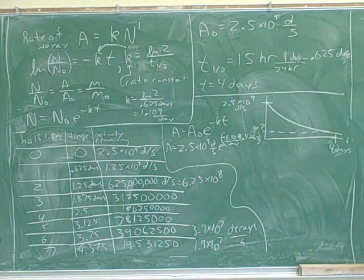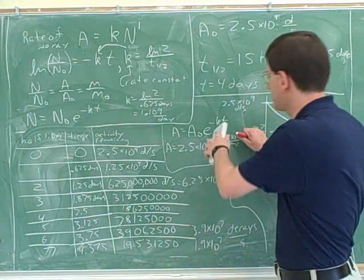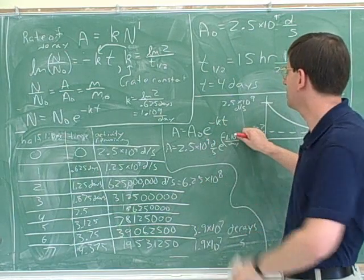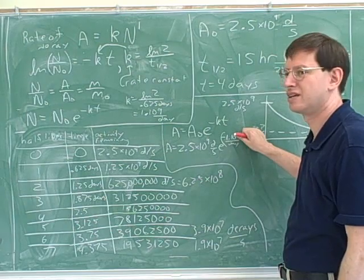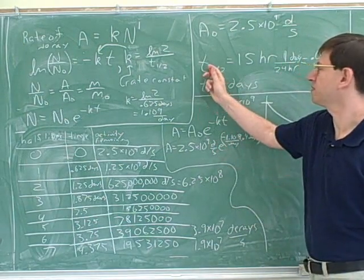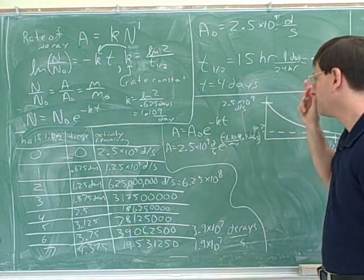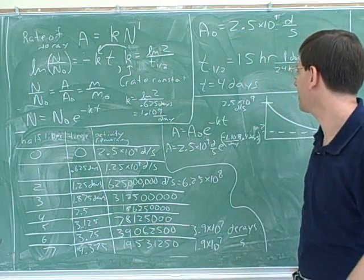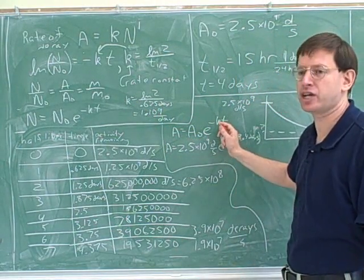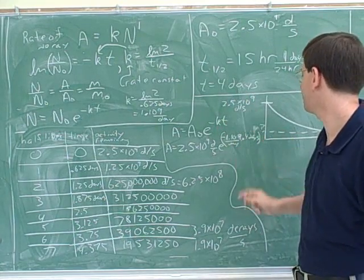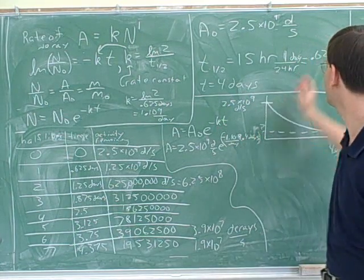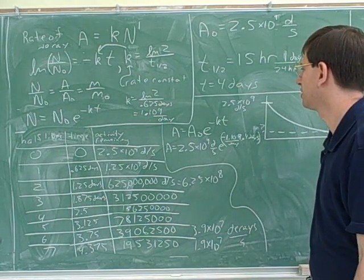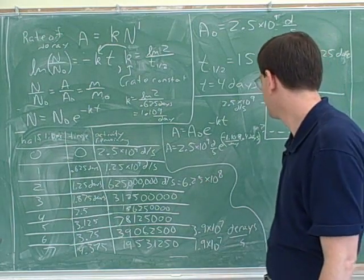Let's see — you're using this equation. And what did you plug in for T? It's 4 days. It's so easy to confuse T one-half with T. You already used T one-half to find K, but T stands for the actual amount of time that has passed, which would be 4. So here we should be putting a 4, not the 0.625.